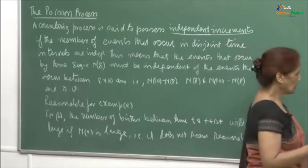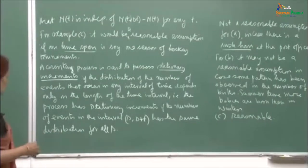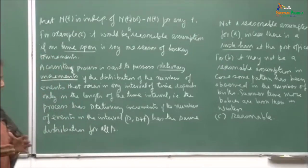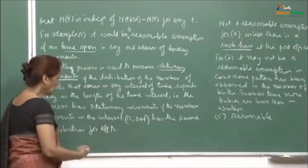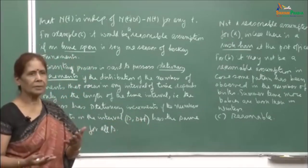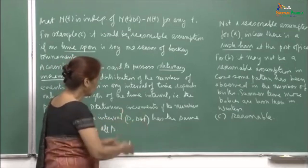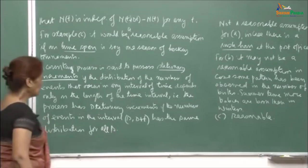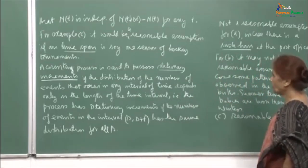The other important assumption for a counting process is stationary increments. What we are saying is that the number of increments that occur should depend only on the length of the interval. For example, for the interval (s, s+t), the length is t. It will not matter what value s takes — as long as the interval length is t, the number of increments depends only on that length.